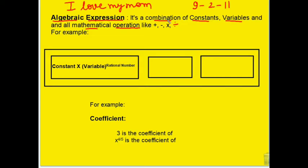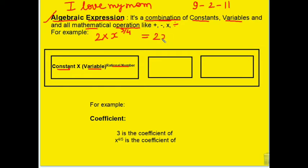We said combination of constants and variables. The combination that allows us to create mathematical language — algebraic expressions — has a fixed formula: constant into variable, and the power of the variable is a rational number. For example, we take constant 2, multiplied by variable x raised to the power 3/4. So this gives us 2x^(3/4). This is our algebraic expression.